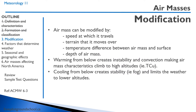An air mass can be modified by the speed at which it travels, the terrain that it moves over, the temperature difference between the air mass and the surface, and the depth of the air mass. If we warm an air mass from below, we create instability and convection, and the air mass characteristics climb to a high altitude — for example, a towering cumulus takes those air mass characteristics up to a higher altitude. If we cool the air mass from below and create stability, we limit the weather to the lower altitude. That's when we have fog.